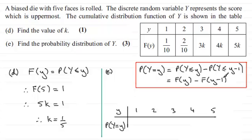If we start at this first one here, then the probability of Y equaling 1 is just simply one-tenth, because there's no previous probability. But when it comes to the probability of Y equaling 2, that's going to be F(2) minus F(1). So two-tenths minus one-tenth is one-tenth.